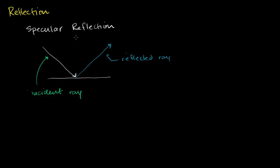Let me define these angles precisely. If I drop a straight line perpendicular to the mirror surface, the angle between the incident ray and that perpendicular is the angle of incidence — I'll use theta. And the angle between the perpendicular and the reflected ray is the angle of reflection. It's a property of specular reflection — and you can see this with any regular mirror — that the angle of incidence is equal to the angle of reflection.